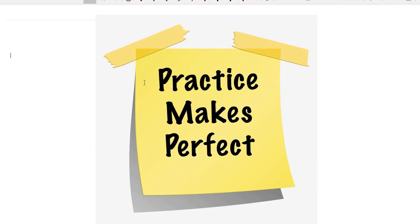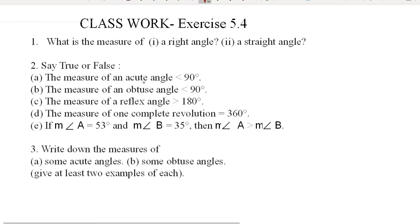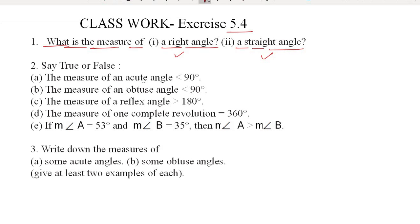Practice makes us perfect. Let us try to solve some questions based on measuring angles. Exercise 5.4, the first question is: what is the measure of a right angle, and the second option is a straight angle. That's very simple — the measure of a right angle is 90° and the measure of a straight angle is 180°.